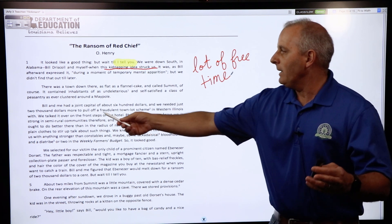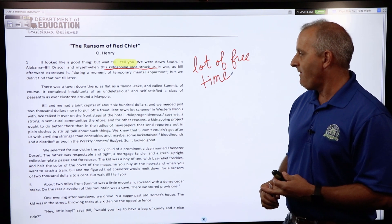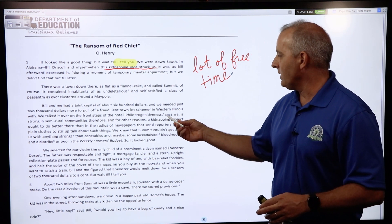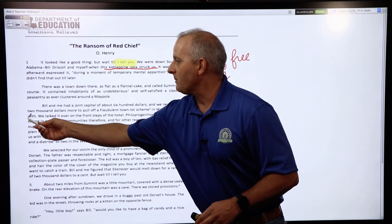Let me read one more line: 'We talked it over on the front steps of the hotel. Philoprogenitiveness, says we.' Let me just stop right there. We've got this part 'says we,' we also have something right here—you might think it's insignificant, but you're never supposed to end a sentence with the preposition 'with.'